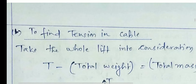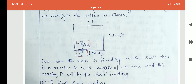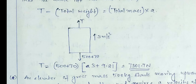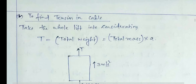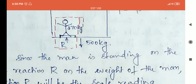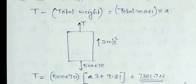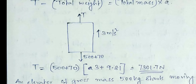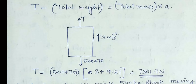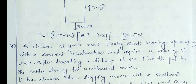To find the tension in the cable, since we have to find out the tension, we take the whole system. Tension T acts upward. What acts downward? There is definitely 500 kilogram, but that is not sufficient because there is a man of 70 kilogram. So total mass acting downwards is 500 plus 70, and the movement is upward at 3 meter per second square. Applying D'Alembert's principle: T minus (500 plus 70) into 9.81 equals 570 into 3. Upon solving, tension equals 7301.7 Newton.